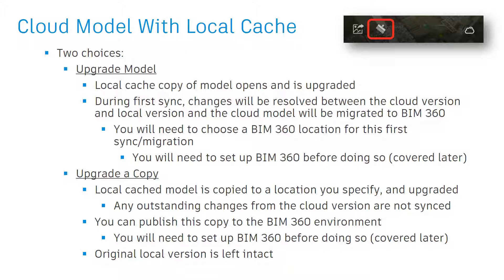If you choose upgrade a copy, a copy of the local cache will be created, and you'll be prompted to name it and choose a location for it. That new copy will then be upgraded to the latest release. Note that any outstanding changes in the cloud model will not be synced. If you want the copy to remain a cloud model, you'll need to open it and publish it to the BIM 360 environment, selecting a folder within a BIM 360 project.